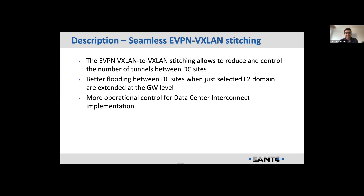Here is a quick brief about this feature. The key advantages of EVPN VXLAN-to-VXLAN stitching are: it dramatically reduces the control plane and the number of tunnels across two or multiple data centers; it helps reduce flooding going across data centers; and it helps operationally in controlling the data center interconnect implementation.